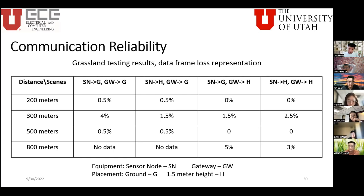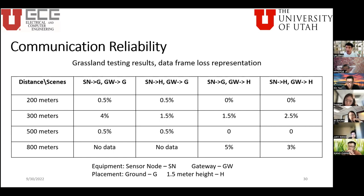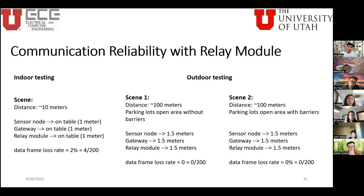At 500 meters: with the gateway on the ground no data was received. When the gateway was placed at 1.5 meters, data was successfully received from the sensor node on the ground with 5% frame loss, and with the sensor node at 1 meter height, 3% frame loss was achieved — acceptable for the project.